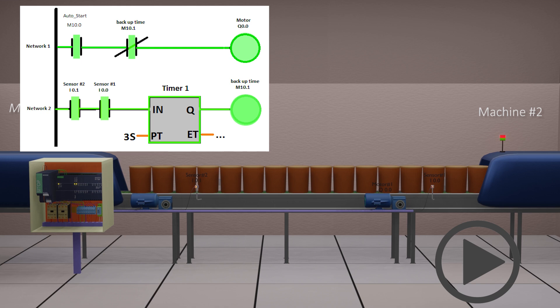Once the timer is over, the backup timer normal close bit M 10.1 in network 1 opens, and this will stop the backup conveyor motor Q 0.0.